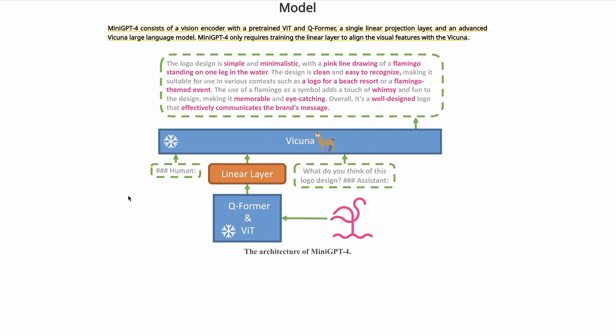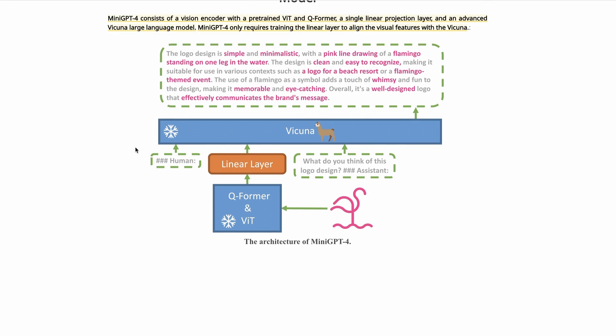They did it with four A100s for about 10 hours on a few million images. Then the last bit to get it perfectly going for Vicuna is done on just one A100 in about 10 minutes. People are asking them to release the first pre-training part so others could fine-tune their own versions for different tasks. If you had special questions you wanted to ask about images of products or something like that, you'd be able to fine-tune it to do that.